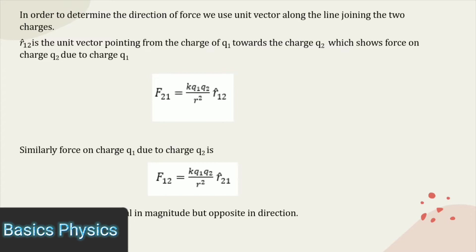Mathematically, F21 is equal to K times Q1 Q2 divided by R square, where R12 is the unit vector that describes the direction of force.